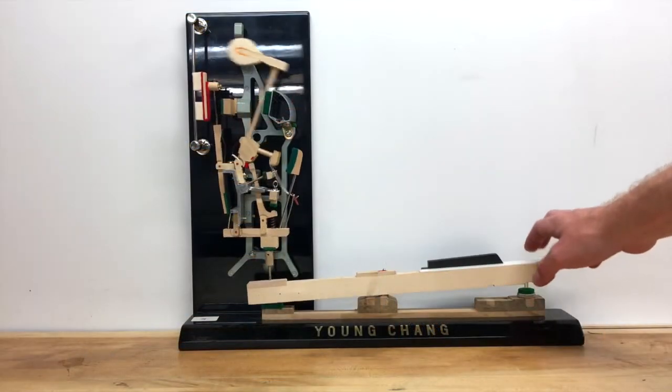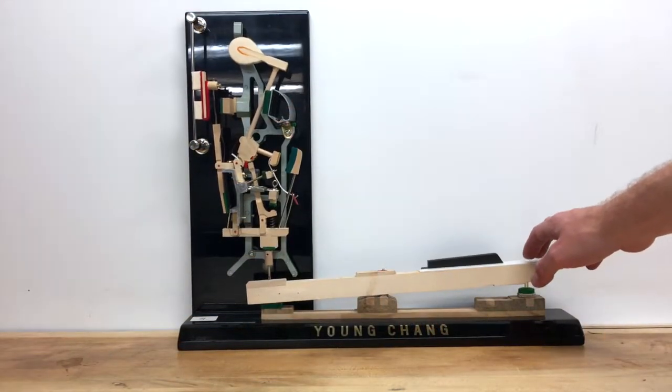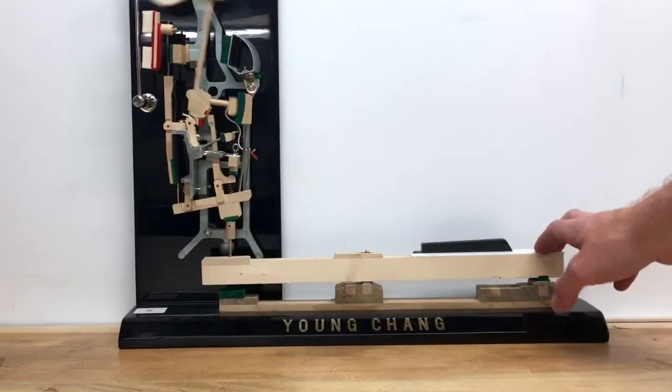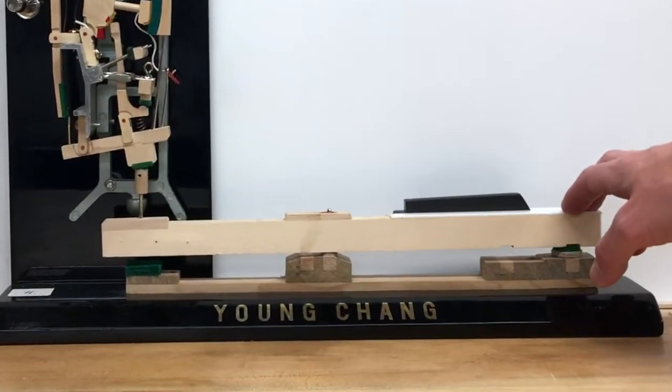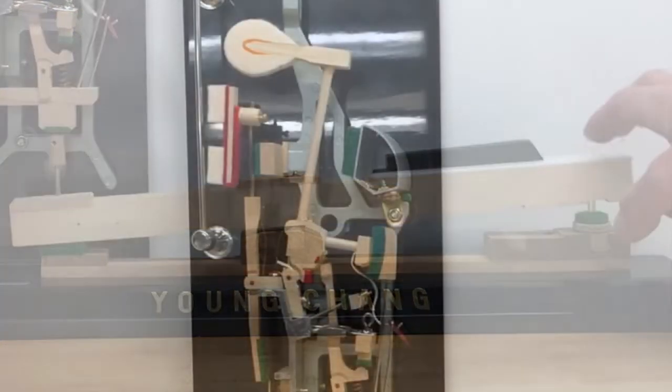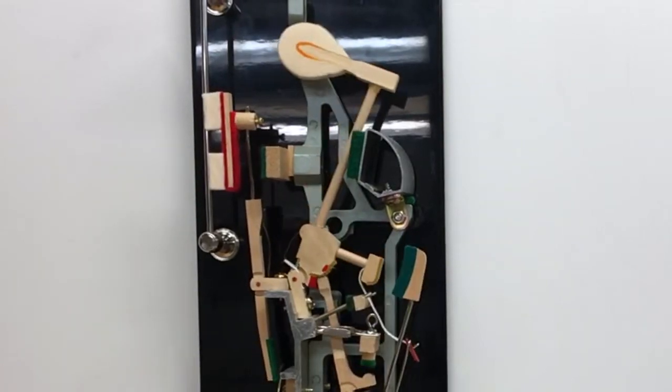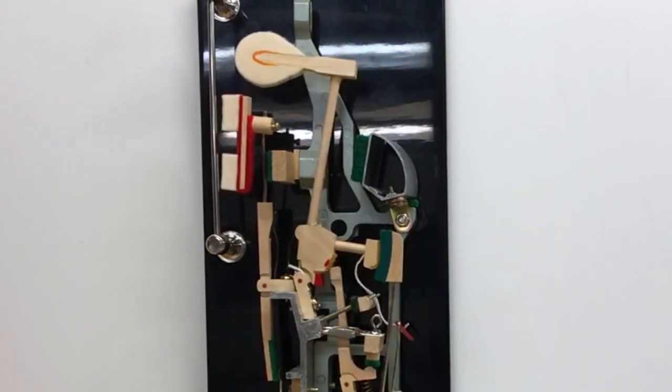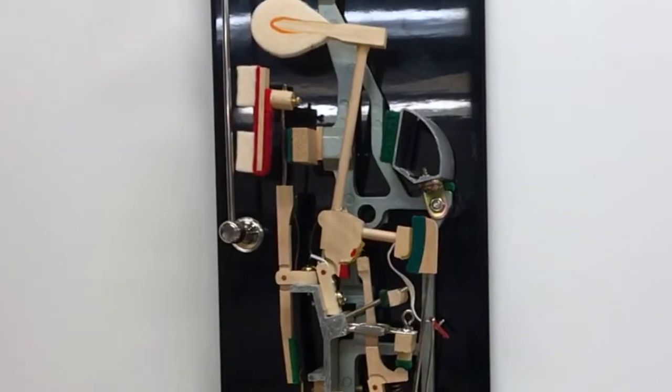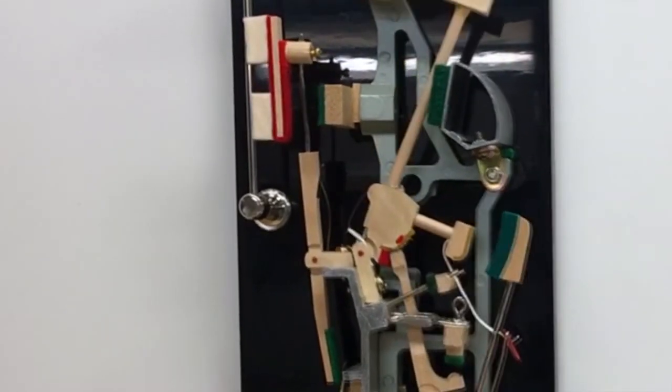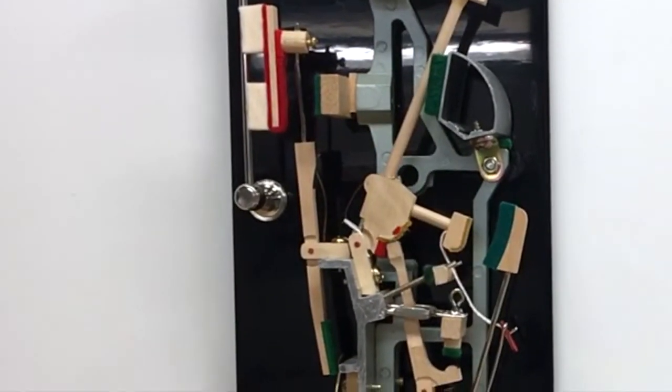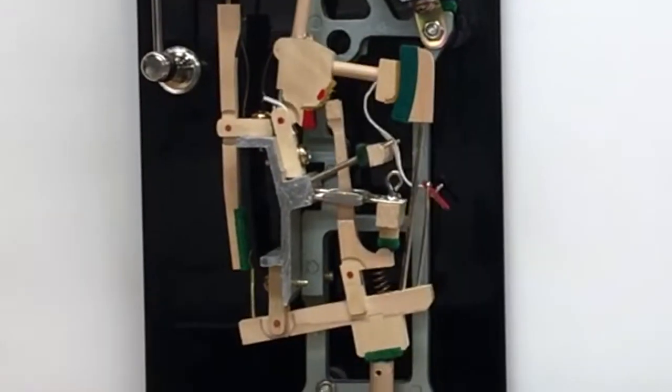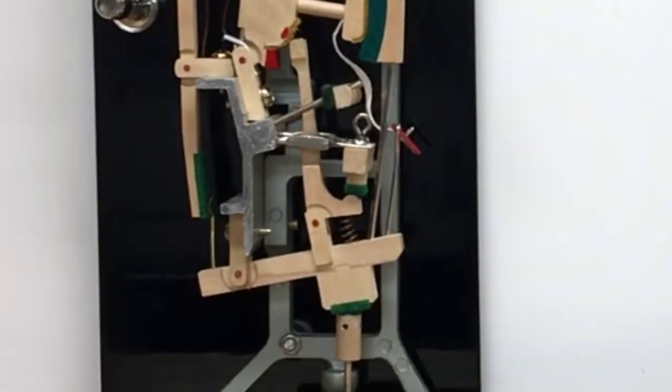These are the basic moving parts of the vertical action system: the key, which is pressed by the player; the hammer, which makes the sound by striking the string; the damper, which quiets the sound by pressing on the string; and the whippen, which uses the key movement to move the hammer and damper.